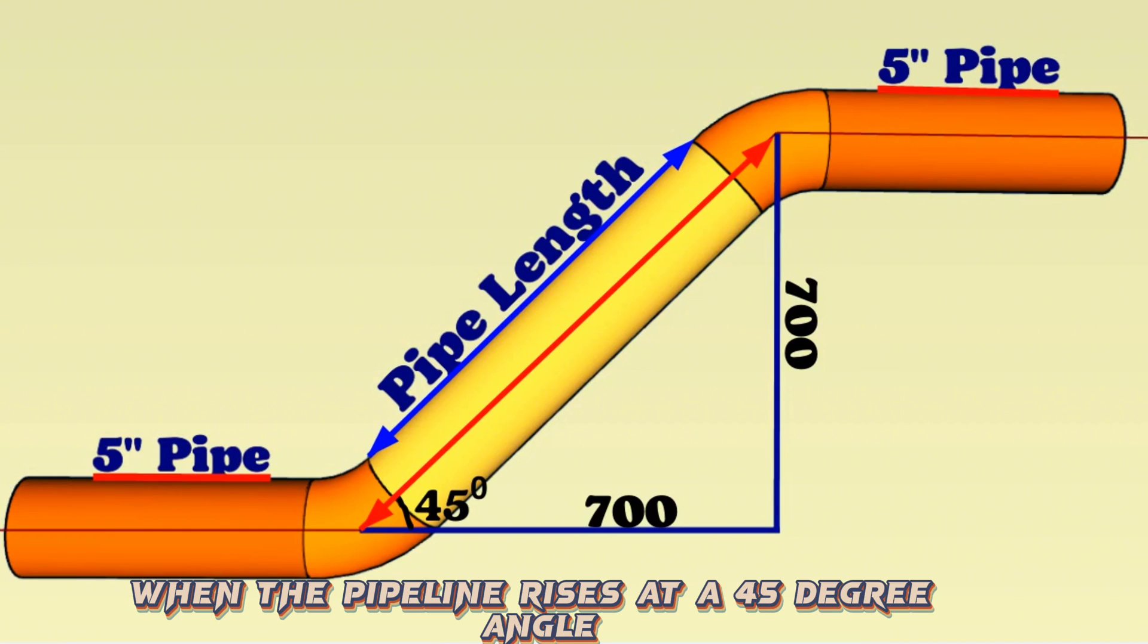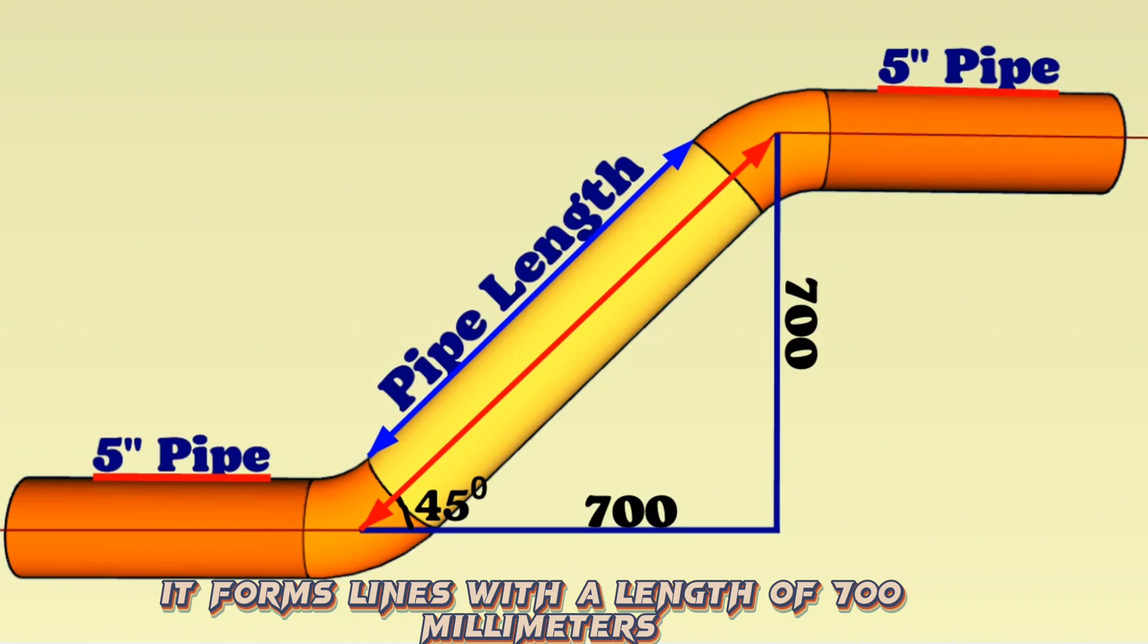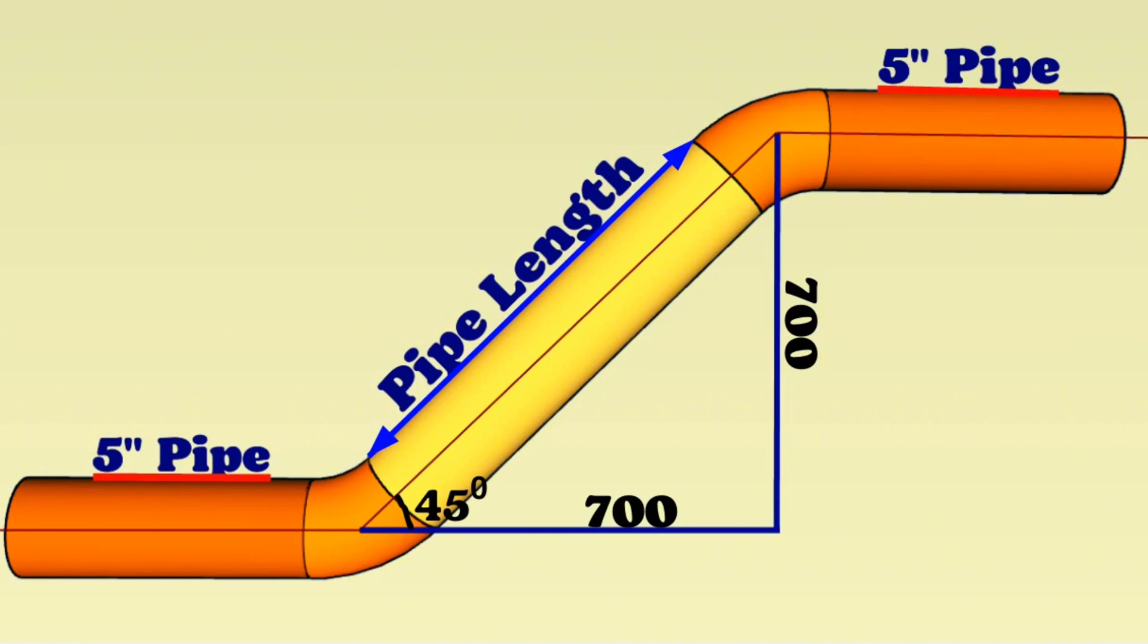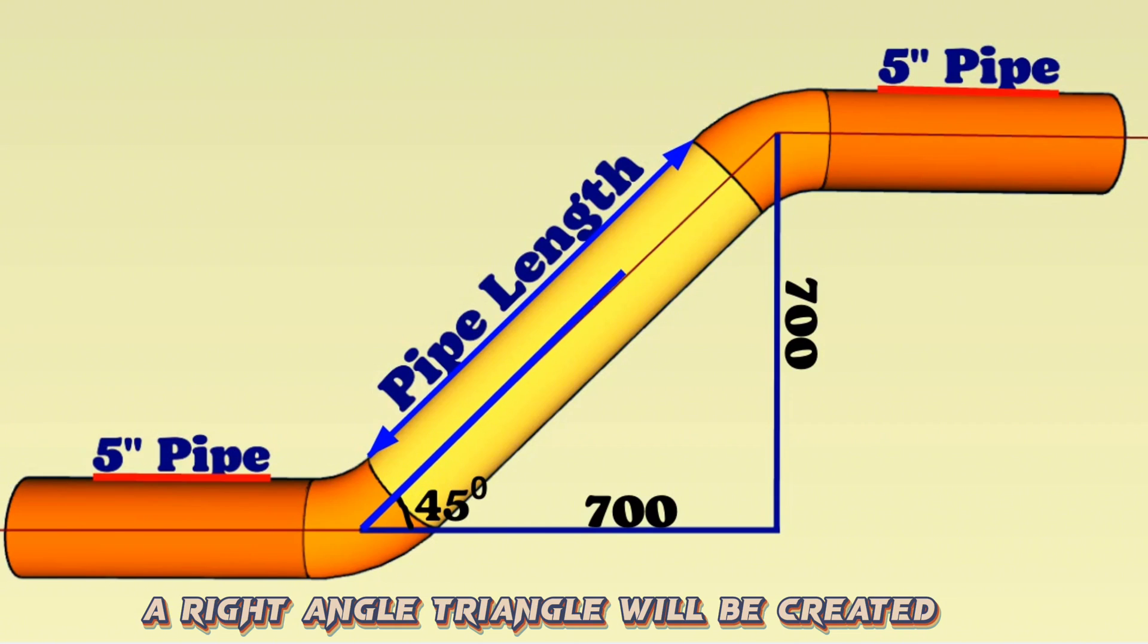When the pipeline rises at a 45-degree angle, it forms lines with a length of 700 millimeters passing through the centers of the elbows. If we combine these lines, a right-angle triangle will be created.